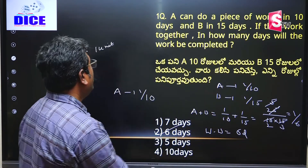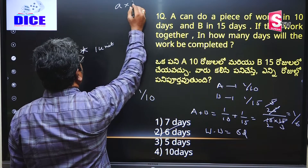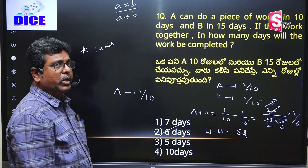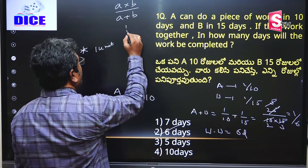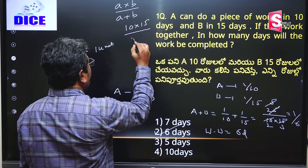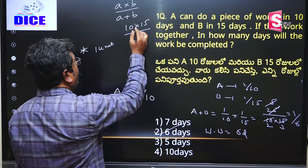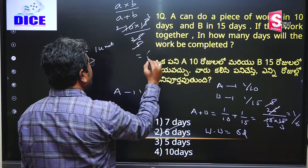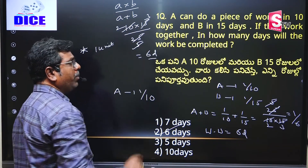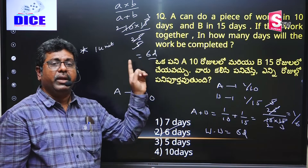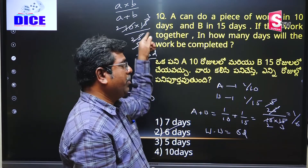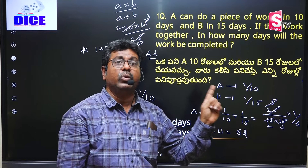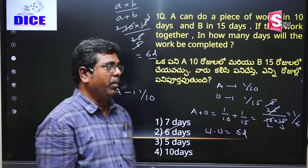You can also go with the shortcut formula: A×B / (A+B). Here A is 10 and B is 15, so 10×15 / (10+15) = 150/25 = 6 days is the answer. This is the best method to use for the problem. You can do it using either the original method or this shortcut formula — both give the same result. There is a 100% chance of this problem appearing in the Group 4 examination.